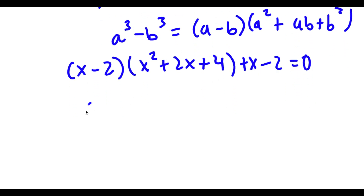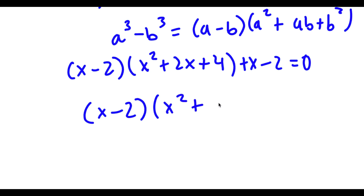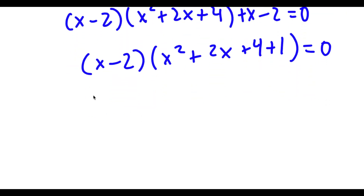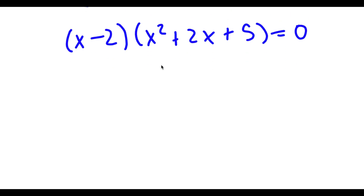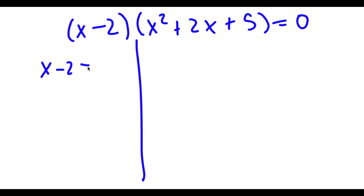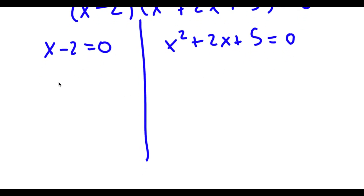So now if I factor out x minus 2, I get x minus 2 times x squared plus 2x plus 4 plus 1 is equal to 0, which is the same thing as x minus 2 times x squared plus 2x plus 5 is equal to 0. So to solve this I have two equations: x minus 2 equals 0, and x squared plus 2x plus 5 equals 0. For x minus 2 equals 0, x is obviously equal to 2, so this is one solution.